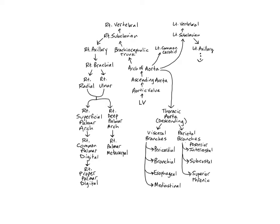From the left ventricle, blood moves through the aortic valve, up the ascending aorta, and continues into the arch of the aorta. The brachiocephalic trunk is the first and largest branch off the arch, supplying the right side of the head and neck — that's the cephalic part of its name — and the upper arm, that's the brachio part of its name.